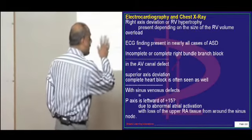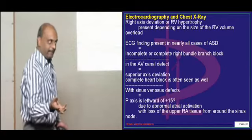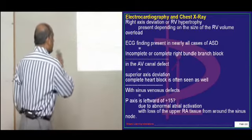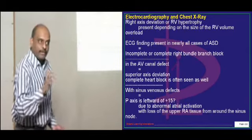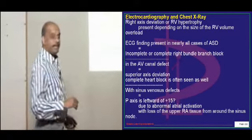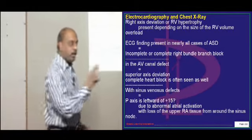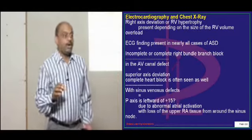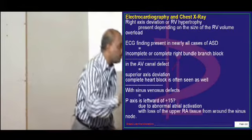Generally there is a right axis deviation because of right ventricular hypertrophy. If there is an associated AV canal defect in ostium primum type, there can be superior axis deviation and complete heart block can be associated with the ostium primum type and AV canal defect.